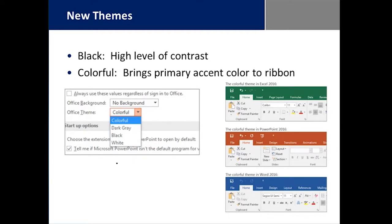We have new themes with 2016. The first new theme is simply called Black, and that's your high contrast option. So if you need a little more contrast on the screen or you just like a little more contrast, this one might be for you. There's another one called Colorful, and what Colorful does is it brings the primary accent color to the ribbon. Microsoft Excel has always been green, PowerPoint has always been a version of orange, and Word has always been blue. So that primary color gets applied to the ribbon for contrast, which helps you know exactly which program is open when you have a lot of windows open.